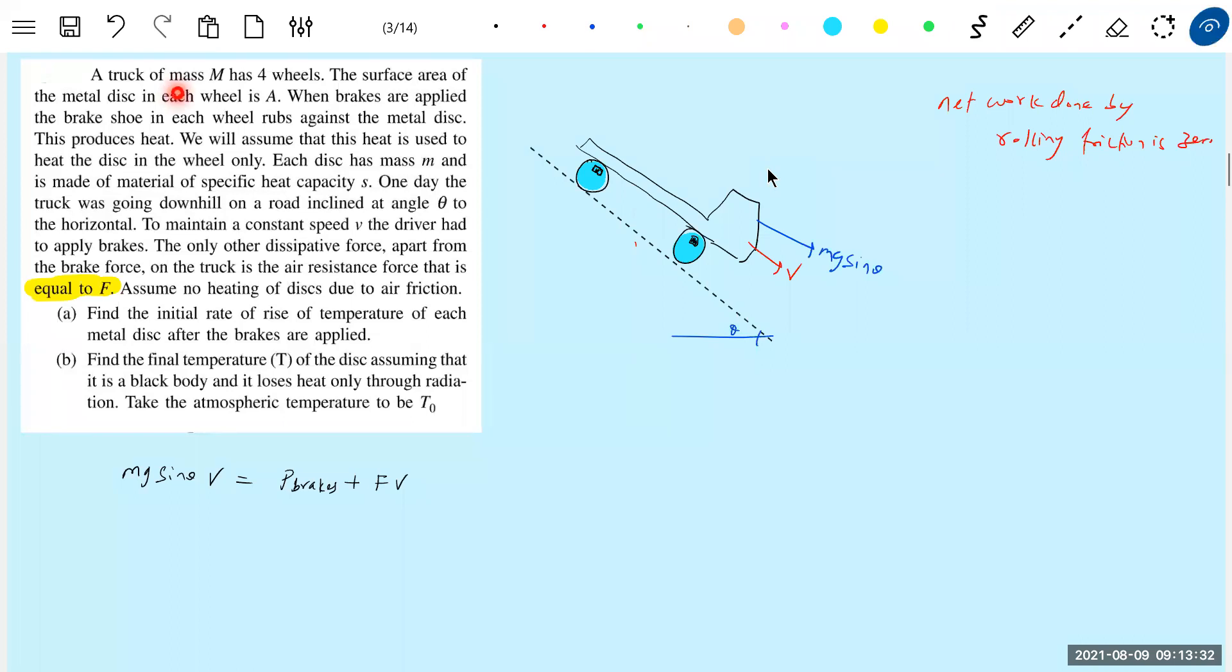A truck of mass M has four wheels. Okay, we will do one thing. M plus M? No, I think mass of the truck. It will be, there is a situation. So if you want, you can say total truck of mass M has four wheels.